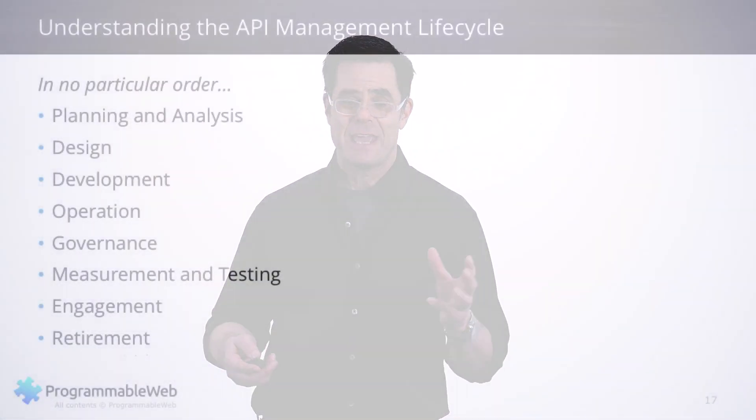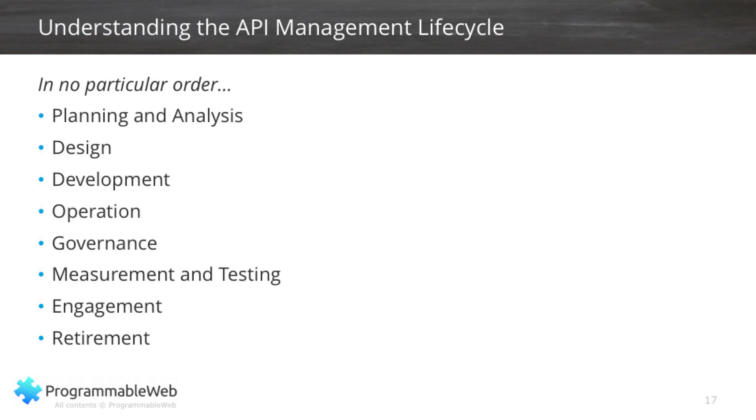We've covered the eight phases of the API management lifecycle — something that generally takes years to actually run because you're treating it like a product. To recap: planning and analysis, design, development, operation, governance, measurement and testing, engagement, and retirement, also including versioning. In the next and ninth segment of our 11-part video series on APIs 101, we're going to talk about API security — one of the most important aspects of running an API. Thanks very much and we'll see you in that segment of the series.